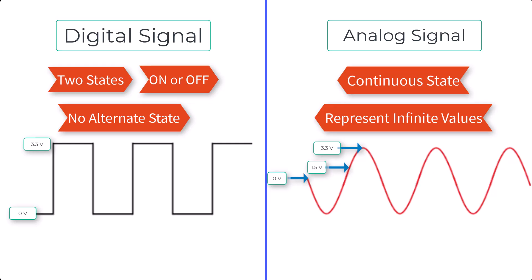The key takeaway is that digital signals are discrete, with defined high and low states, while analog signals are continuous, capturing many possible values between high and low.